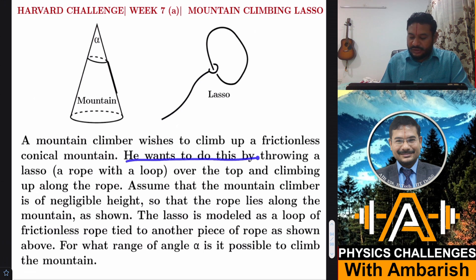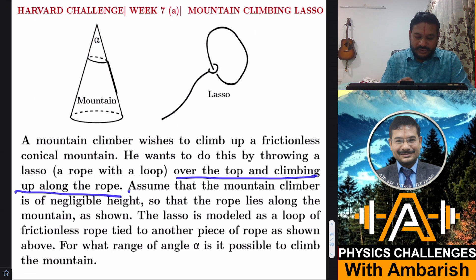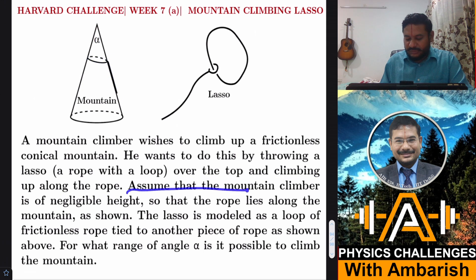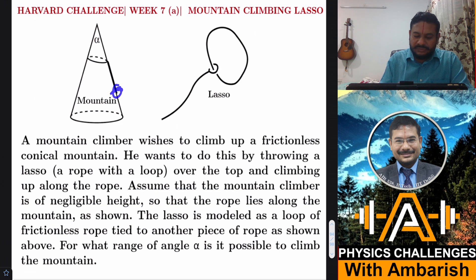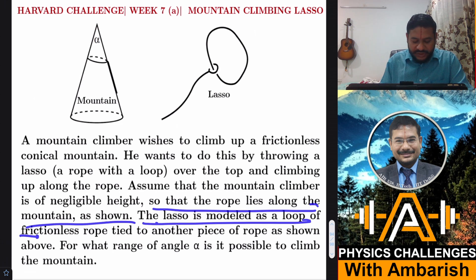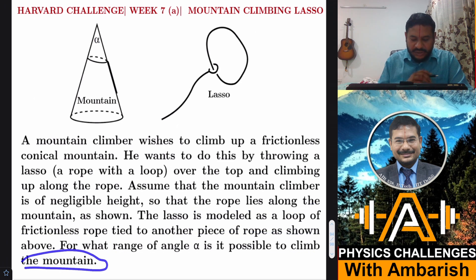So he wants to do this by throwing a rope or a lasso over the top and climbing up along the rope. So his lasso will fit around the mountain and then he can climb along the mountain like this. Assume that the mountain climber is of negligible height so that the rope lies along the mountain as shown. So height of the climber is negligible. You can as well think of it as a small massive rock attached to the rope. Rope is massless. So that the rope lies along the mountain as shown. The lasso is modeled as loop of frictionless rope tied to another piece of rope as shown above. So for what range of angle alpha is it possible to climb the mountain?